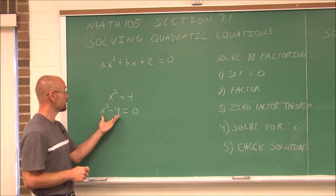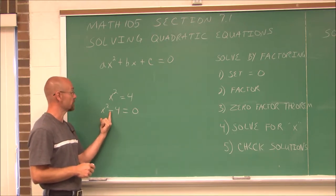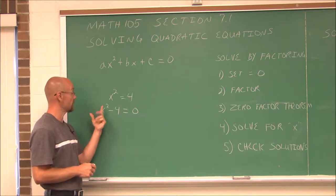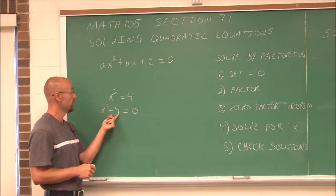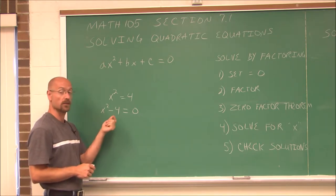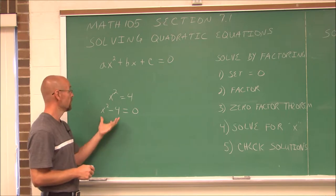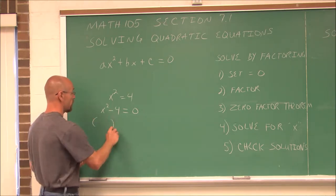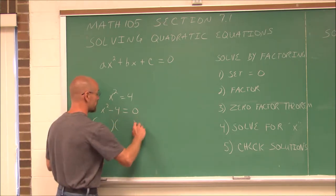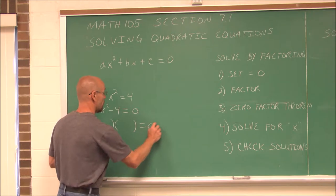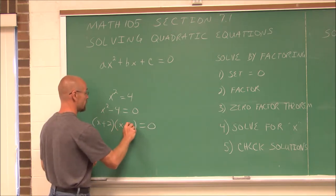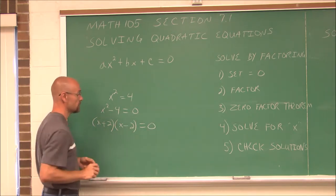To factor this, hopefully we identify this as the difference of squares, because x squared is a perfect square. And 4 is 2 squared. So it's the difference of squares. And hopefully we recall that that factors to x plus 2, x minus 2.